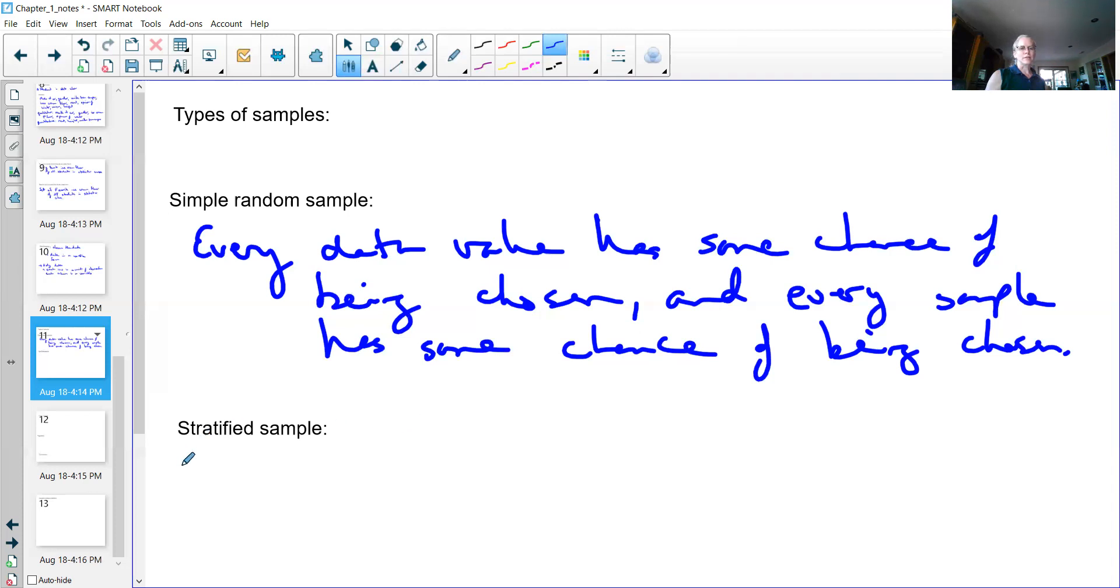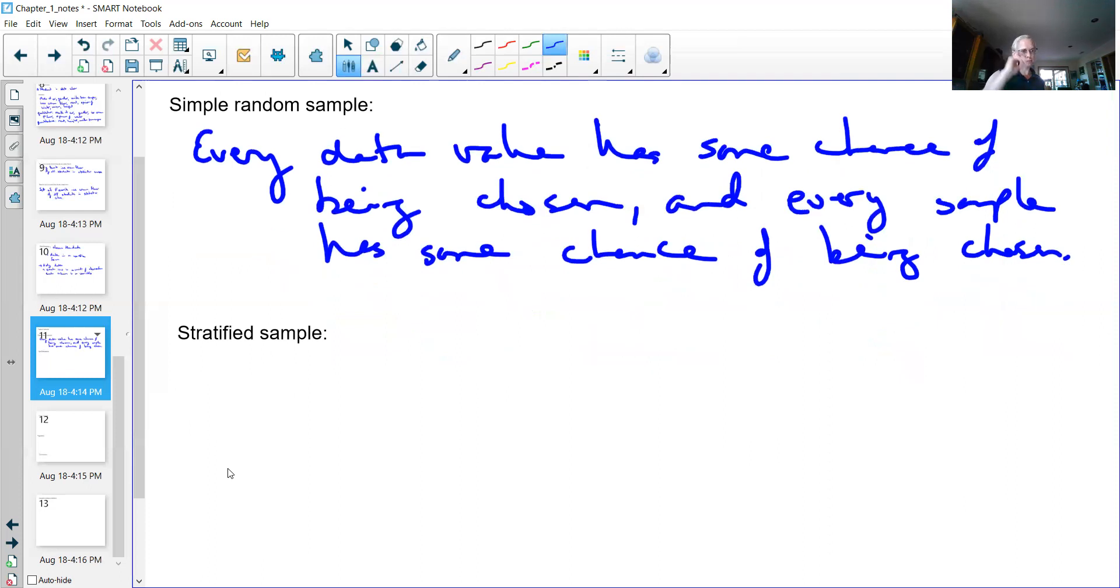The next one is called a stratified sample. Sometimes we don't really want to do a whole simple random sample. They're very difficult to get. Sometimes there are things you might want to sample based on. As an example, if I want to find out the opinion of people about snow making at a ski resort, the people who live near the ski resort may have a different opinion than people who live farther away. I might want to do a stratified sample where I collect information based on that, or if I want to know the opinion of somebody about a movie, different age groups might think differently. So we want to look at sampling what we call stratified.